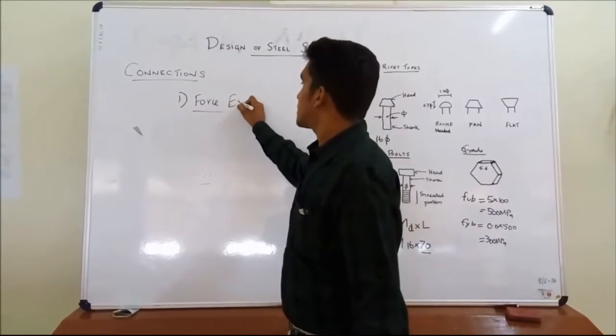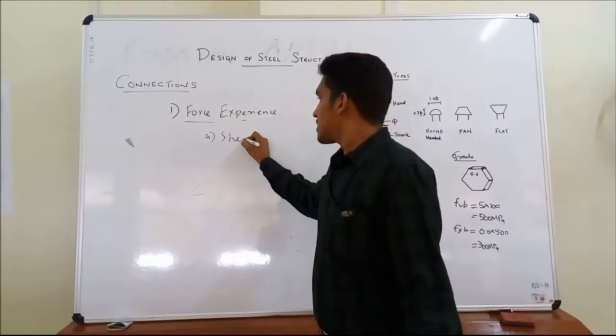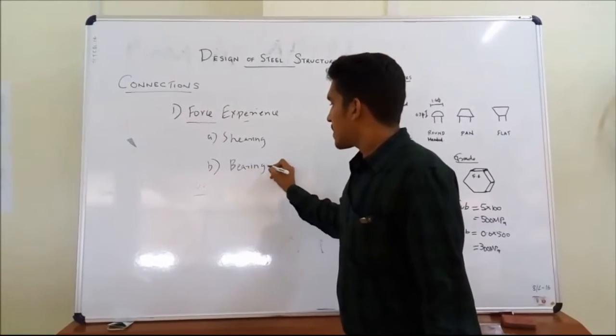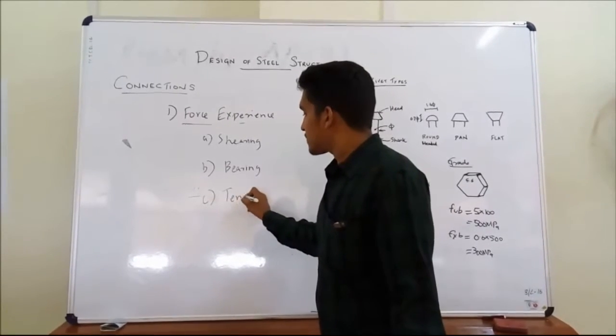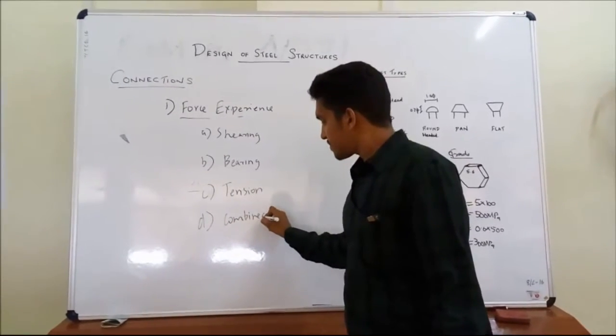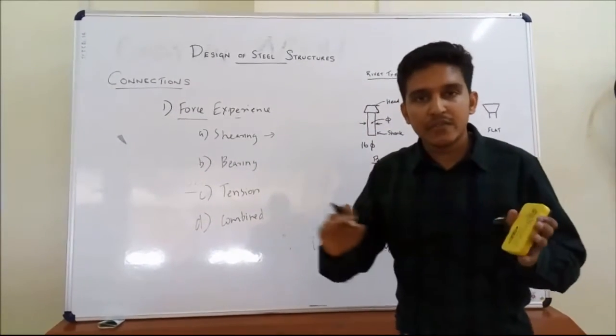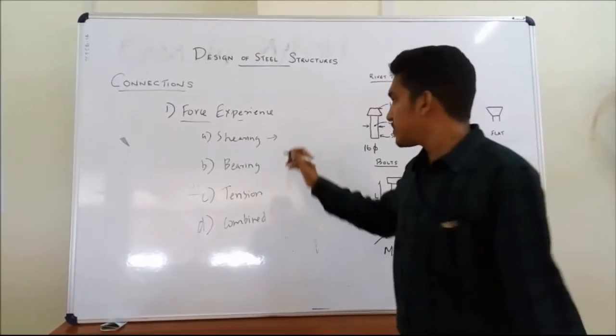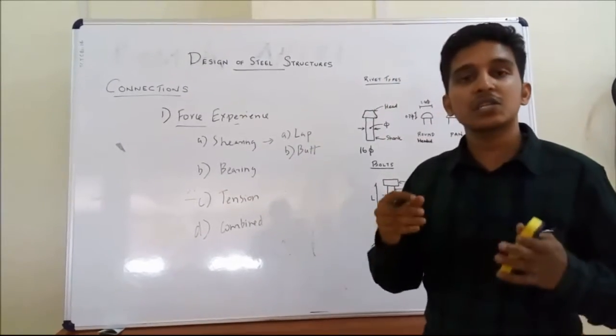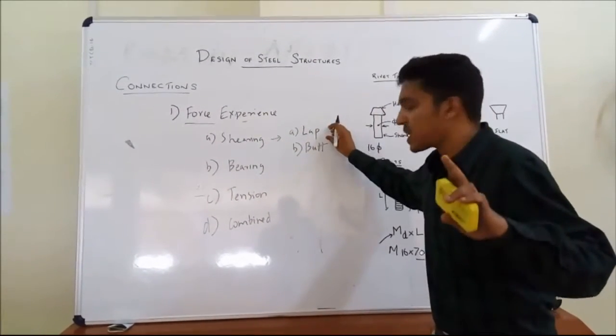The last one is classification based on force experienced by the body. Based on force experience, it can be either shearing, the force experienced, or it can be bearing. Shearing, or tension force, and combined force. As you know, shearing forces include sliding forces, shearing force, which includes two types. The first one is lap connections. The second type is butt connections. These come under shearing. Shearing forces experience on the body, made by lap connection and butt connection.